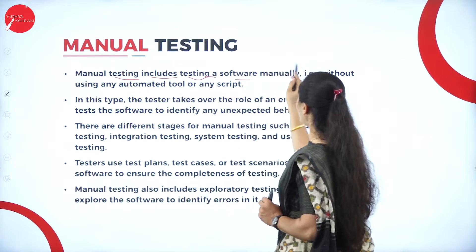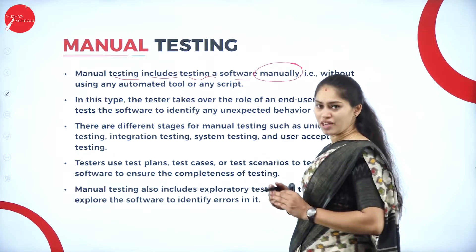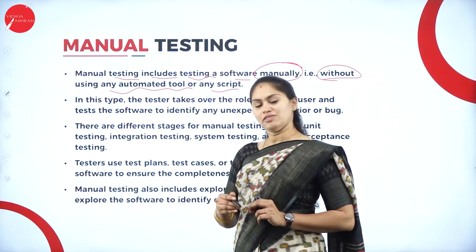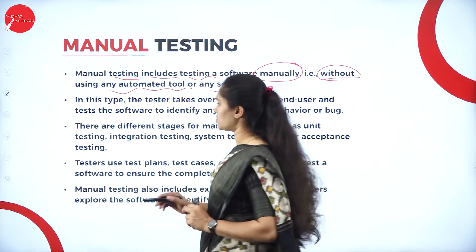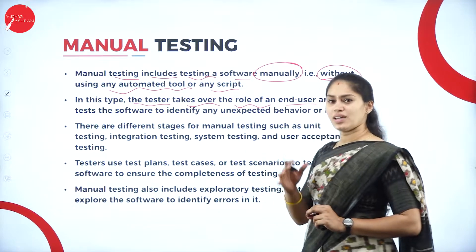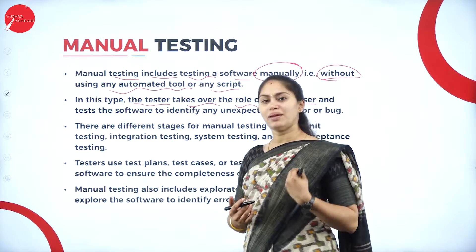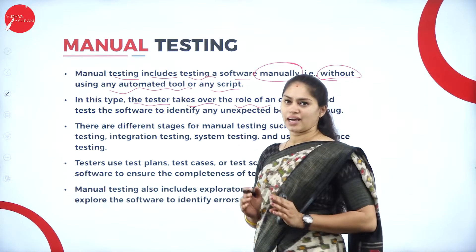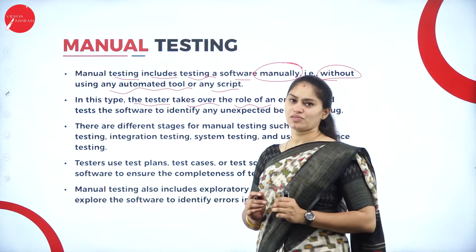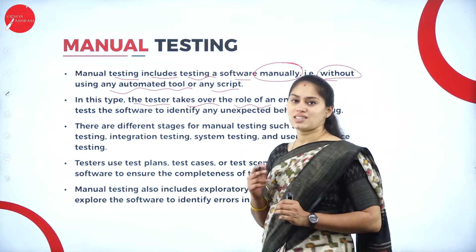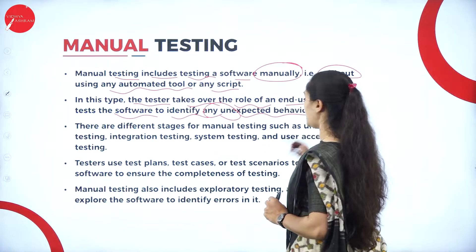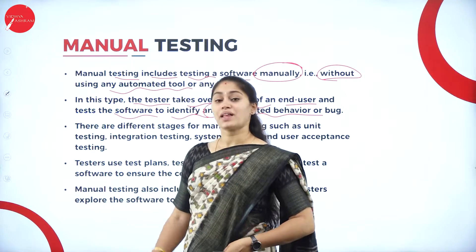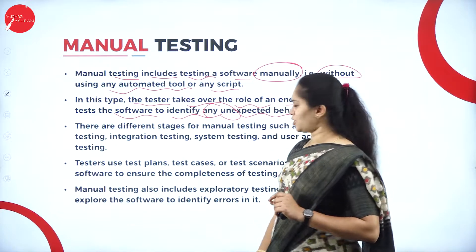Manual testing involves testing software manually — without using any automated tool or script. The tester takes over the role of an end user. Being an end user, what we expect from the software is that the UI needs to be user friendly, attractive, and eye-compatible. In the perspective of the end user, the tester tests the software to identify any unexpected behavior or bug.